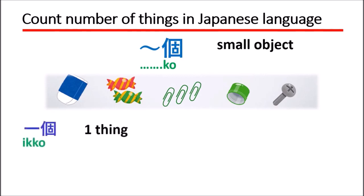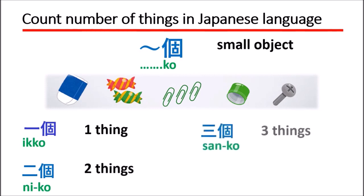一個, which means one thing. 二個, two things. 三個, three things. 四個, four things.